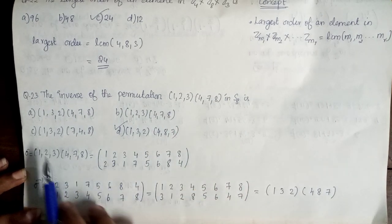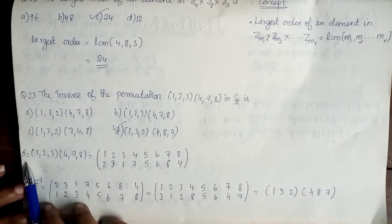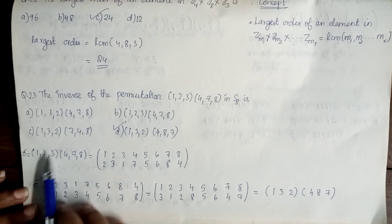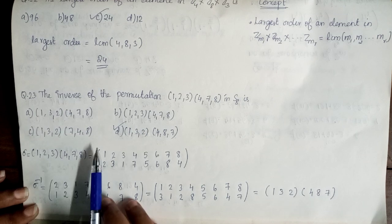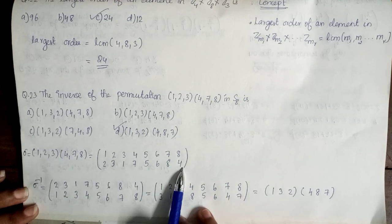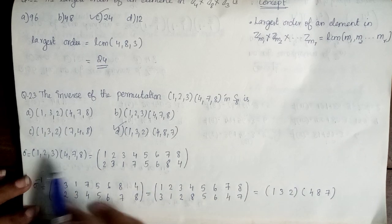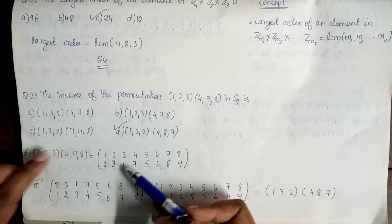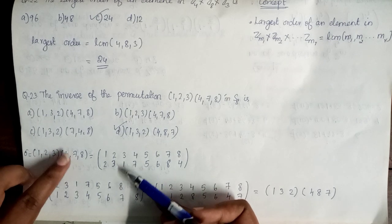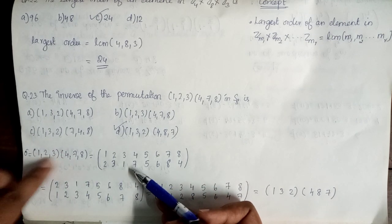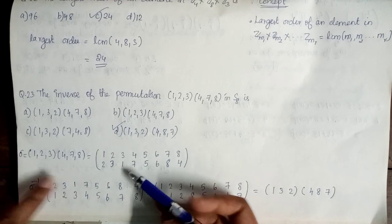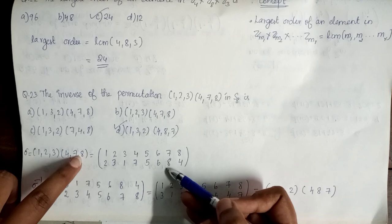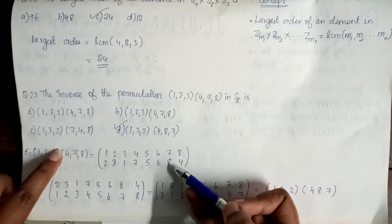This permutation is: 1 is mapped to 2, 2 is mapped to 3, 3 is mapped to 1, 4 is mapped to 7. Here, 5 is mapped to 5, and 6 is mapped to 6, and 7 is mapped to 8, and 8 is mapped to 4.